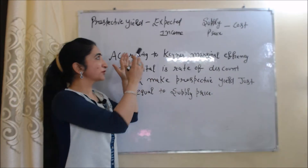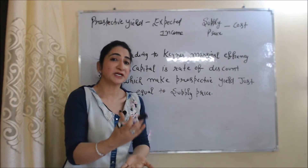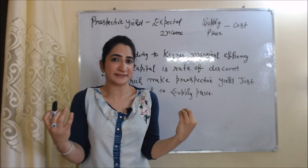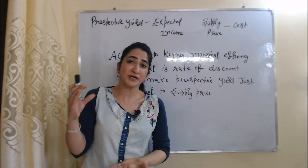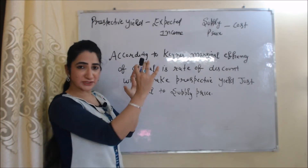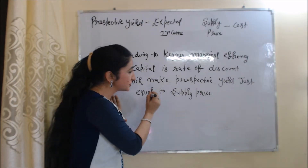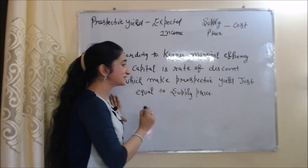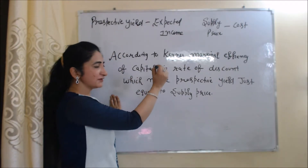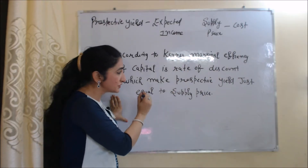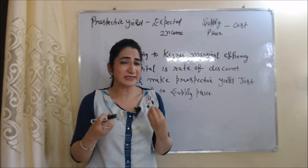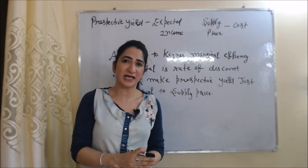As we know, prospective yield is the expected income from new investment, and supply price is the cost of producing a new asset. Keynes gave a different concept of marginal efficiency of capital. According to Keynes, marginal efficiency of capital is a rate of discount which makes prospective yield just equal to supply price, or which makes expected income just equal to cost.